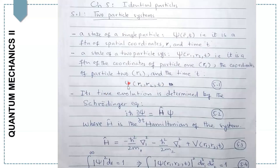Now, to study the time evolution of this function, we simply take the help of the Schrödinger equation. That is iħ ∂ψ/∂t = Hψ, where H is the Hamiltonian of the system. That can be written as H = −ħ²/2m₁ ∇₁² − ħ²/2m₂ ∇₂² + V(r₁, r₂, t). Here we introduce m₁ and m₂, indicating we are talking about a two-particle system, and you see that the potential is a function of time t.